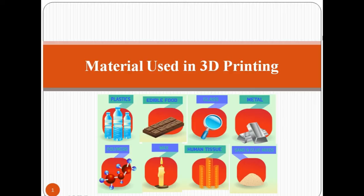3D printers can use a wide range of materials, which includes plastics, resins, metals, ceramics, and many more. In this lecture, we are going to study different materials that are used in 3D printing.